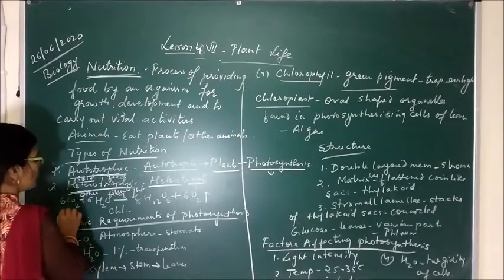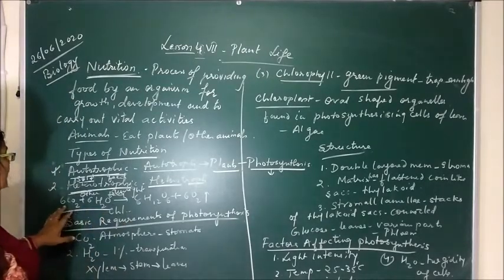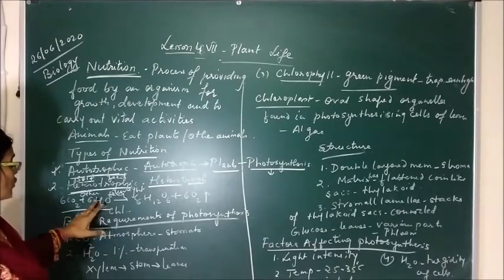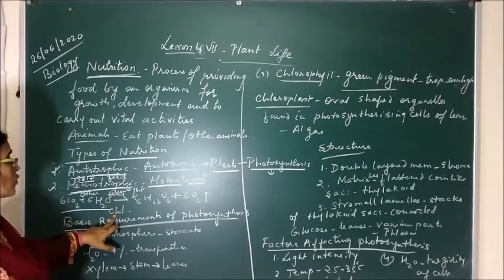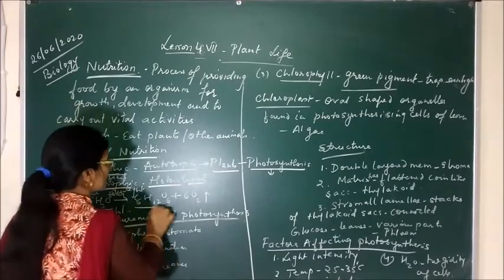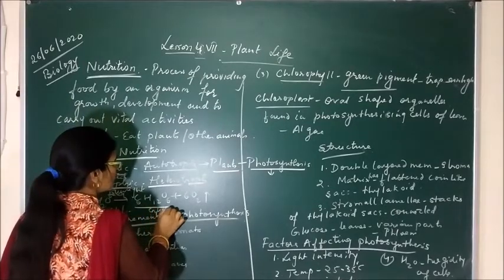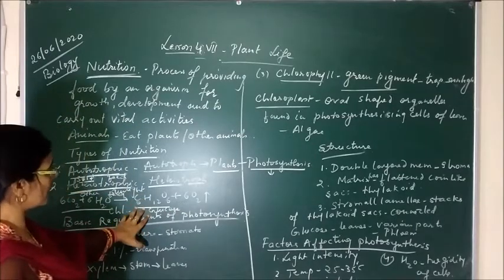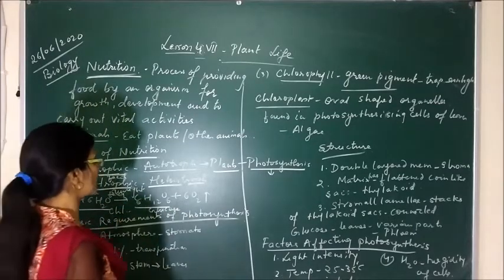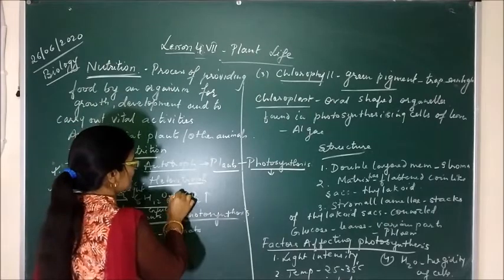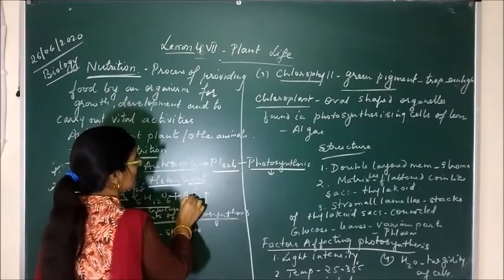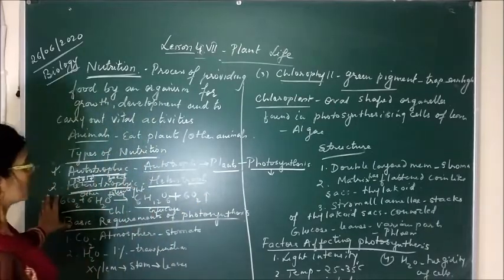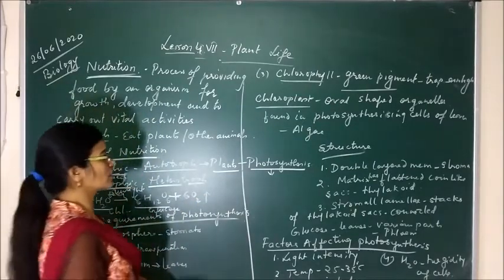Plants carry out the process of photosynthesis using carbon dioxide and water. In the presence of sunlight and chlorophyll, they prepare glucose, which is their food. This glucose is eaten by animals or absorbed by the plants themselves for their growth. As a result of photosynthesis, oxygen is liberated into the atmosphere.